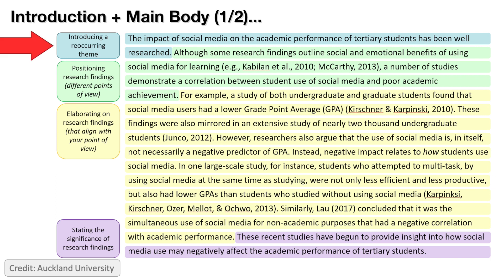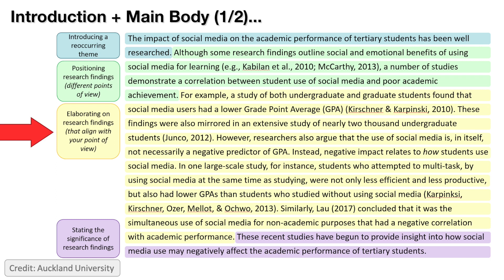The first sentence introduces a recurring theme — it basically outlines your main claim or key point for the paragraph. The next sentence or two are positioning research findings, identifying a couple of major themes you'll discuss, including different points of view. The next chunk of text elaborates on research findings that align with your point of view. The final sentence states the significance of those findings. For each theme you write about, you can organize the literature in this way — it makes your positioning with respect to the broader field very clear to the reader.